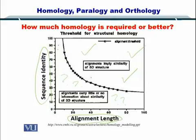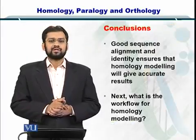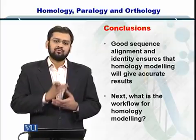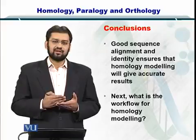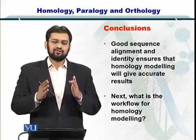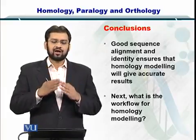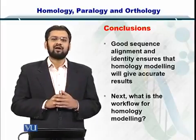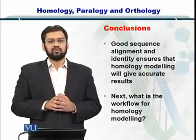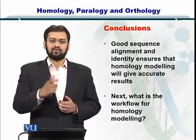So essentially, before you proceed with homology modeling, you look at the alignment length and the sequence identity. If they are high enough, then you go for homology modeling. But if they are low, we will have to employ other strategies such as ab initio modeling or fold recognition, which is also called threading. In conclusion, before proceeding with homology modeling, we need good alignment length and good sequence identity. If we have a high score on both fronts, we can proceed with homology modeling; otherwise, other techniques must be employed towards predicting the protein structure.